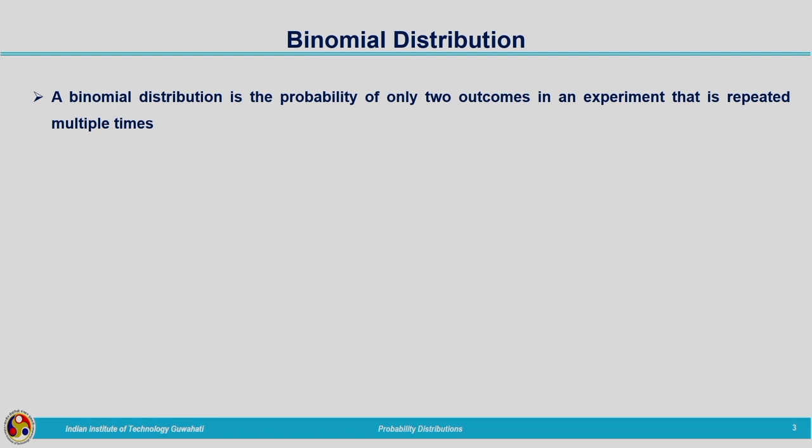The first one is the binomial distribution. A binomial distribution gives the probability of only two outcomes in an experiment that is repeated multiple times — the outcomes are only two. Consider the case of tossing a coin: the two outcomes are getting a head and getting a tail. The probability of getting a tail is 0.5 and the probability of getting a head is also 0.5. This probability is not changing from one trial to another, and we can expect only two outcomes — either a head or a tail — for different numbers of trials.